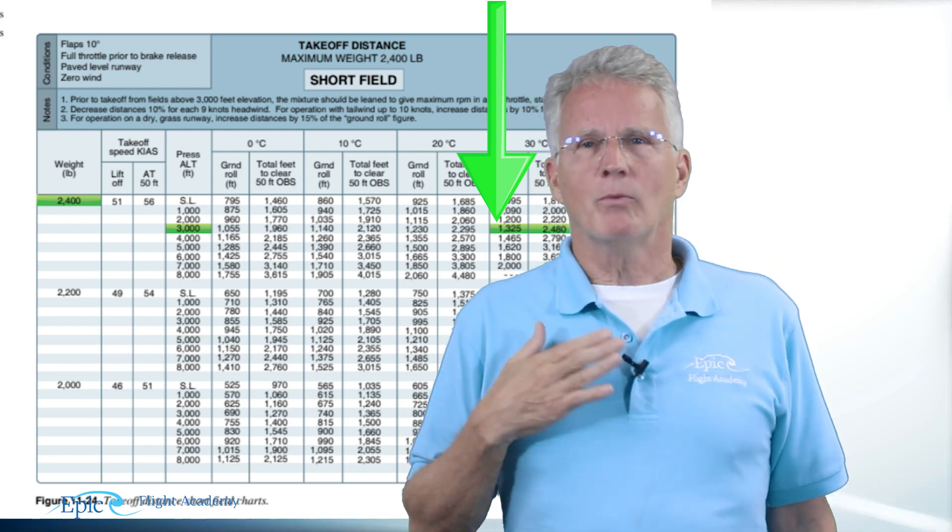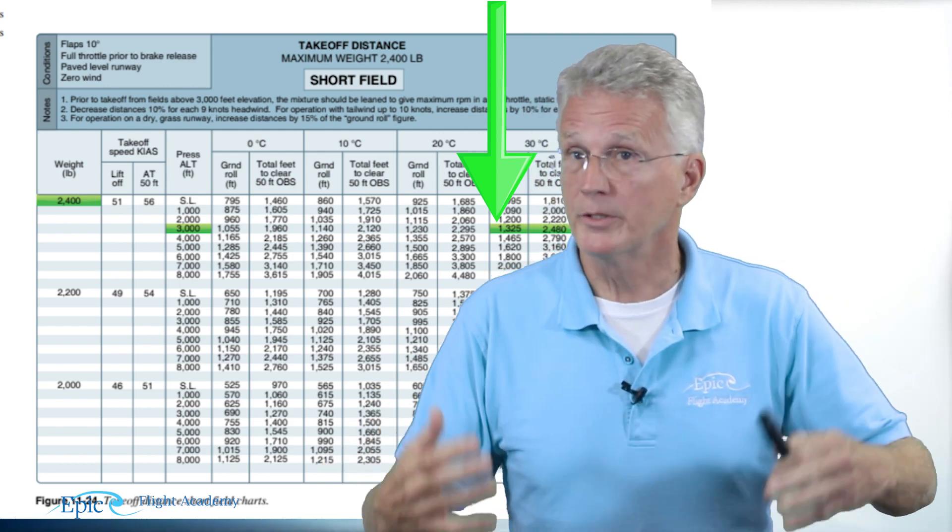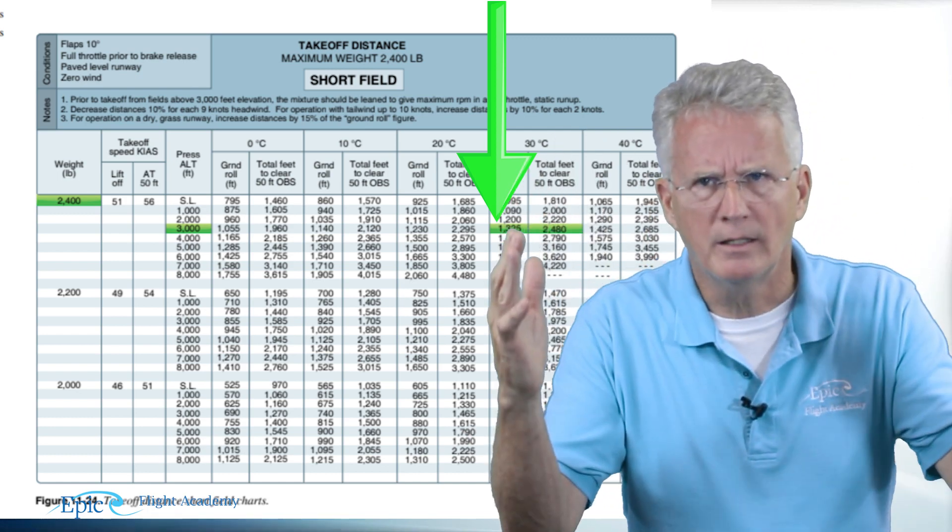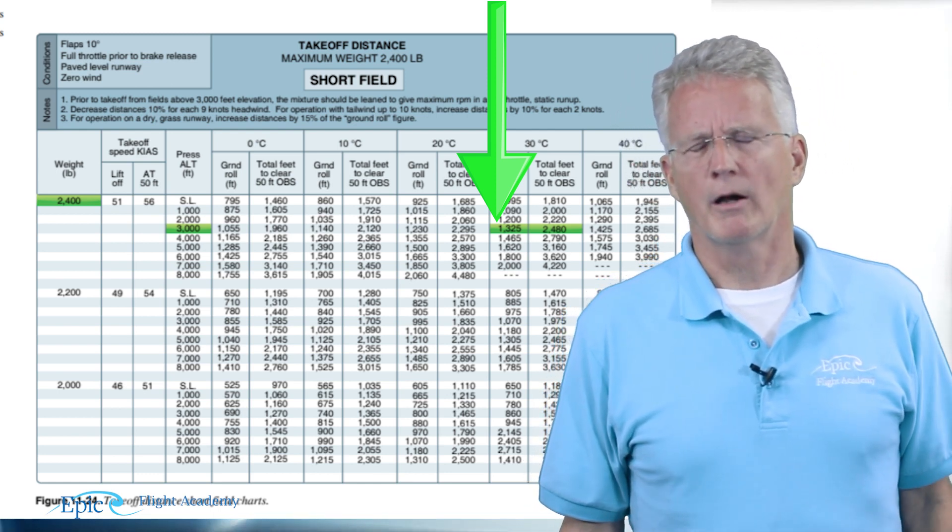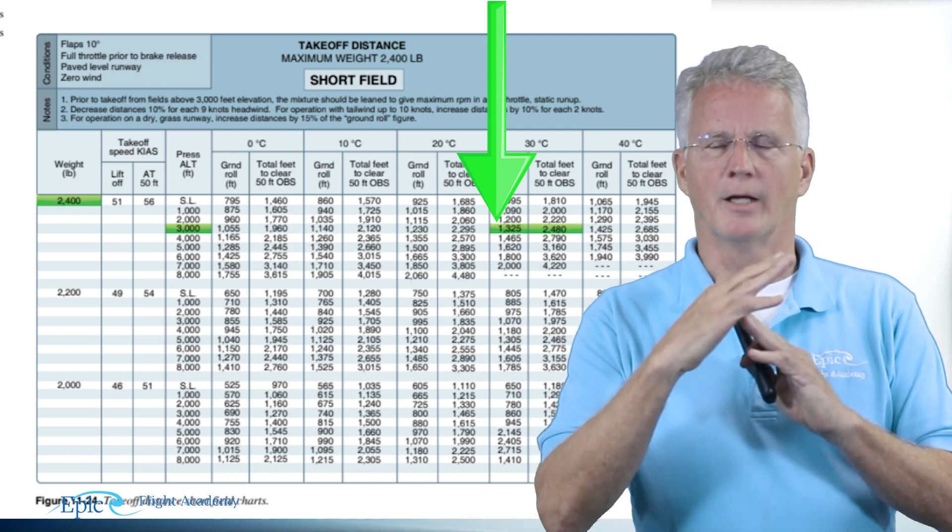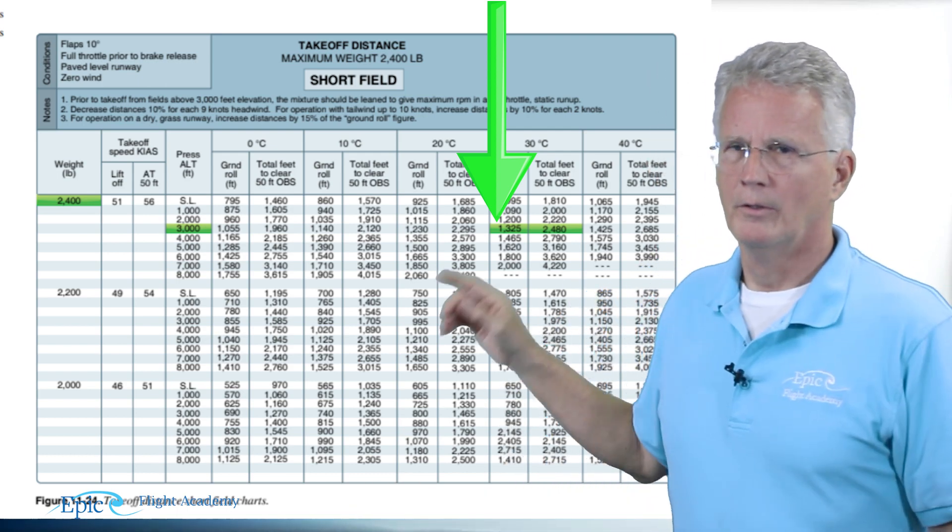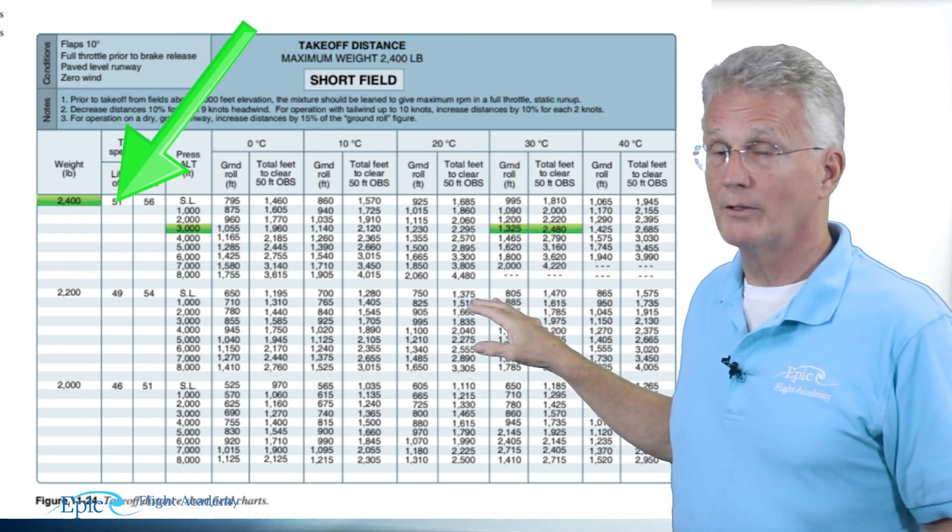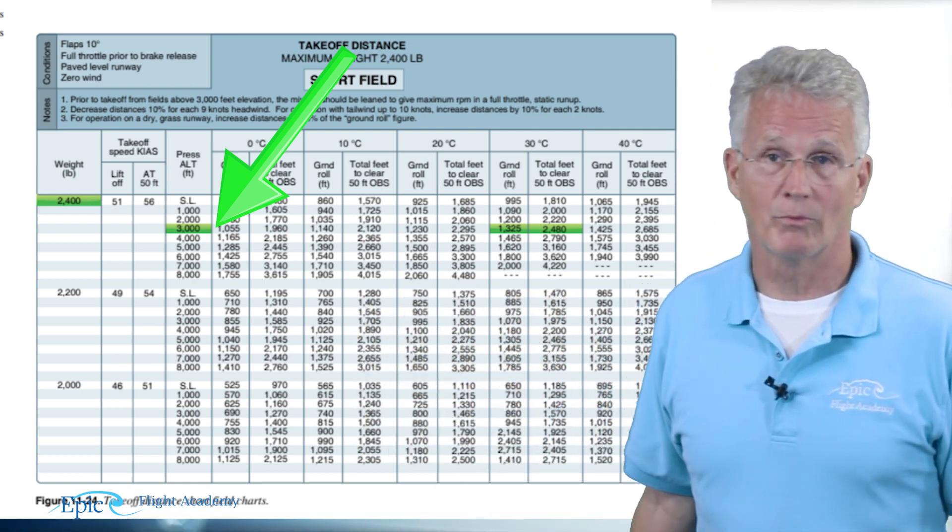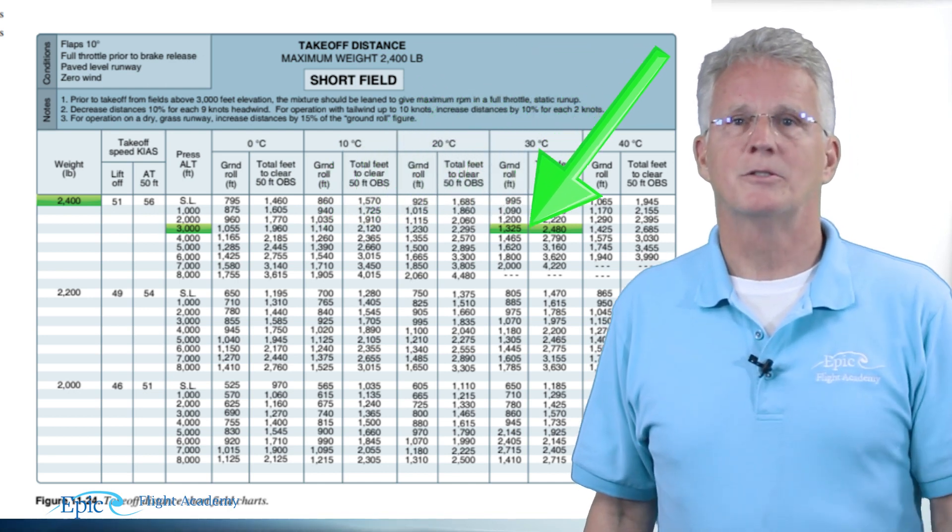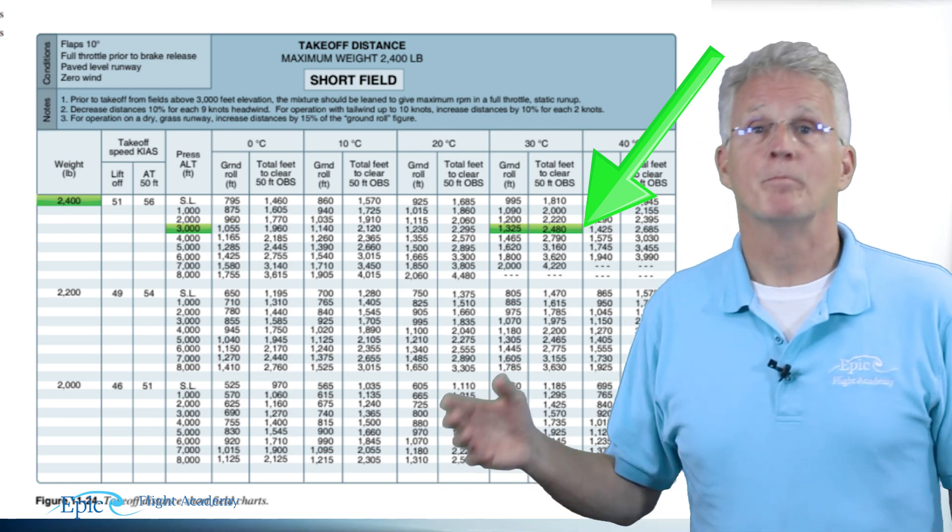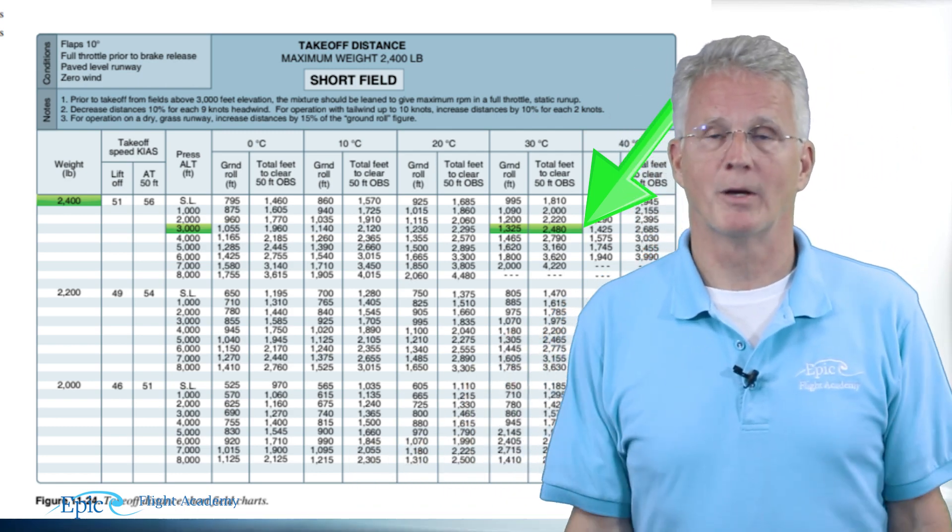Now you're probably thinking hey wait a minute, my flight instructor told me that my performance is based on my density altitude. That's correct. And density altitude is pressure altitude corrected for temperature. So I'm not seeing that on this chart. Okay time out, slow down, take a careful look. We entered with weight then we went to pressure altitude and what did we immediately do? We corrected that pressure altitude as we slide to the right on our chart for temperature. So in fact these numbers that are shown are predicted performance for pressure altitude corrected for temperature, in other words my density altitude.